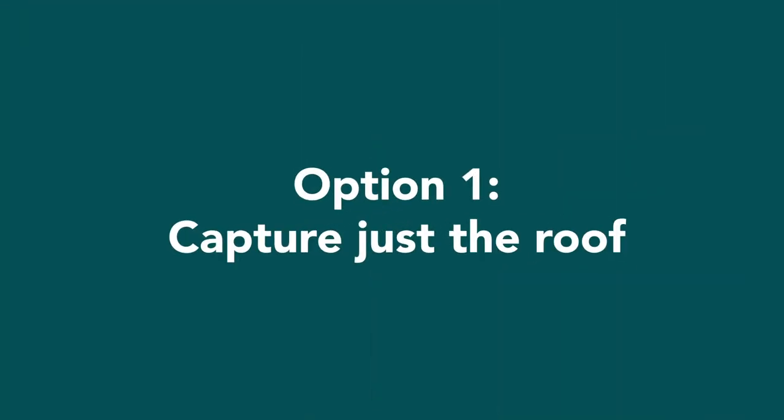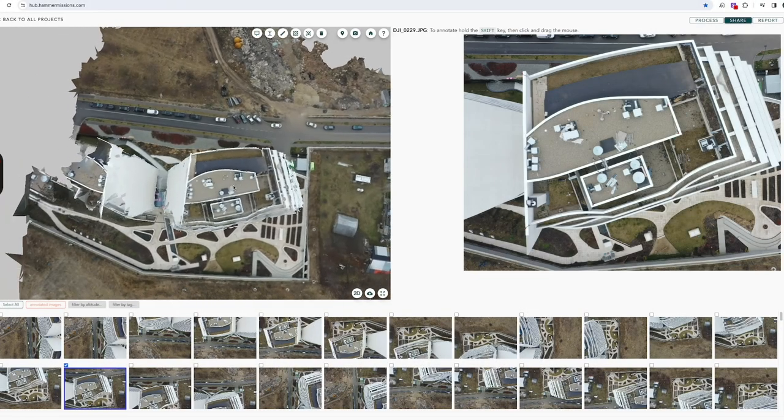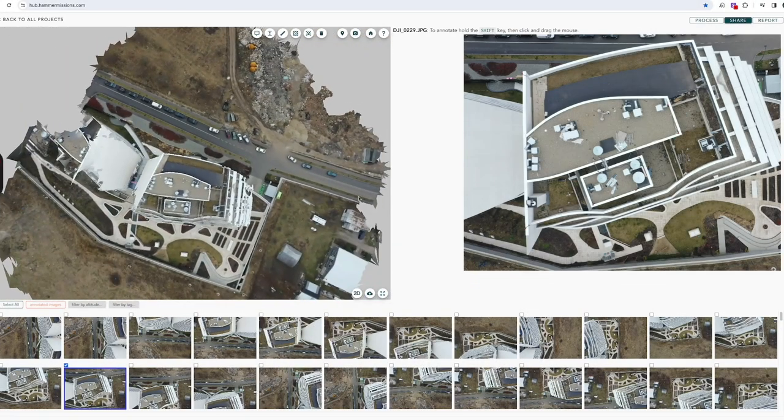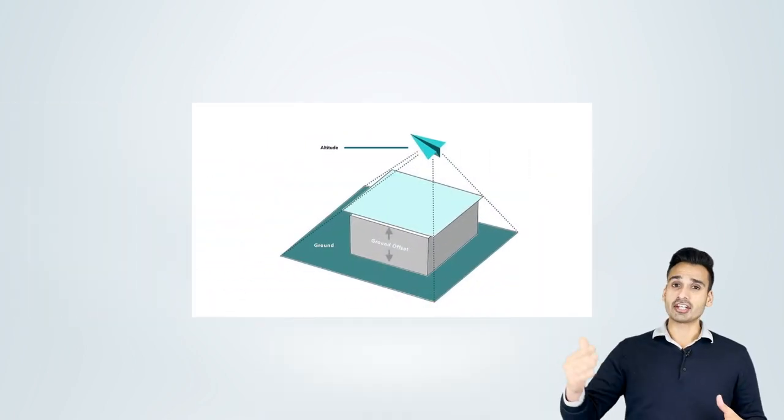Once you've identified your end deliverable, there are many different options. Option number one is to capture simply the roof. If the issue is on the roof, all you have to do is take off your drone and capture just the roof. Because you're capturing a really tall building, it's really important that you take the ground offset into account. If you haven't come across ground offset before, that's simply the height of the building. When capturing the roof of a tall building, you want to make sure that your overlap calculations are done with respect to the roof as opposed to the ground. The overlap calculations are typically done with respect to the ground, so you want to offset that by the height of the building to get your right overlaps.